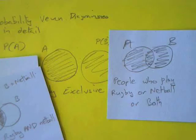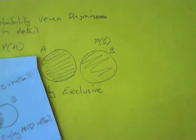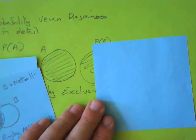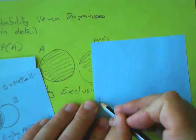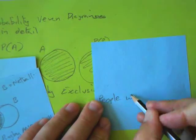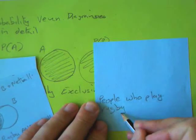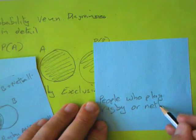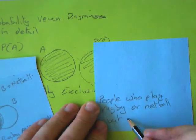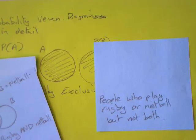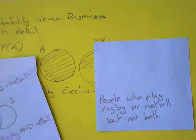Now the next one is a bit of a challenge. I'm not going to draw you the picture — I'm going to write the description and you're going to draw the picture. You can draw it in your mind if you want to. So here it goes: I want the people who play rugby or netball but not both. What's that picture going to look like?